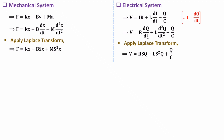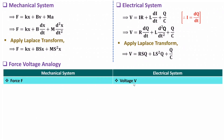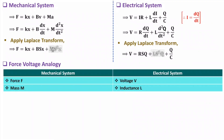Now I will explain the force to voltage analogy by comparing these two equations — the mechanical system parameters against the electrical system parameters. First, force is equivalent to voltage. Comparing mass: in the mechanical equation, mass m is associated with the s²·x term, and in the electrical equation, inductance L is associated with the s²·q term. So in force voltage analogy, mass m is equivalent to inductance L.